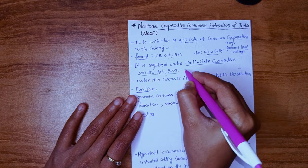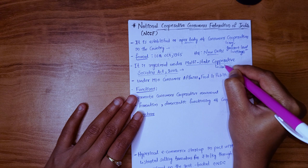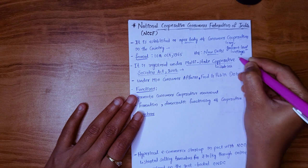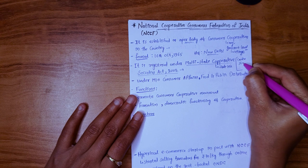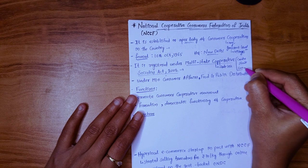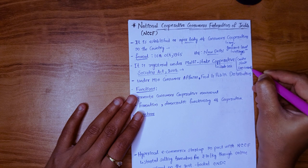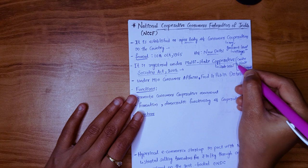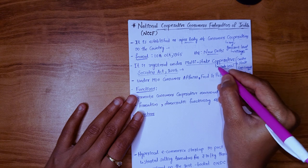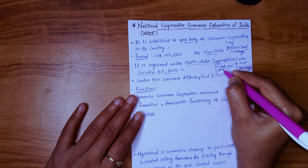NCCF is registered under the Multi-State Cooperative Societies Act 2002. Usually, cooperatives come under the state list. We have three lists in our constitution: the central list, the state list, and the concurrent list. So cooperatives come under the state list.